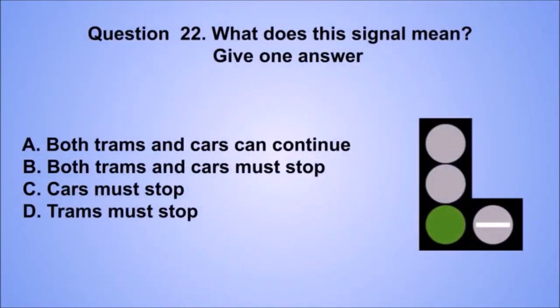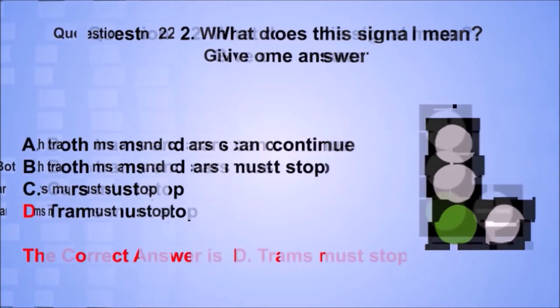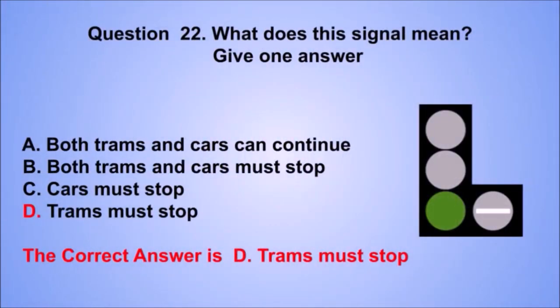Question 22. What does this signal mean? The correct answer is D: Trams must stop.